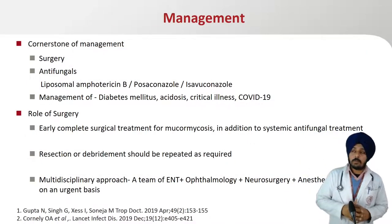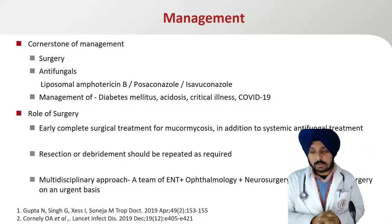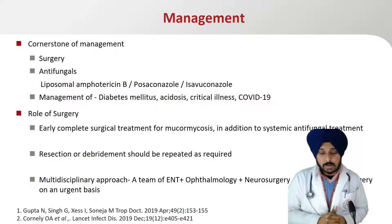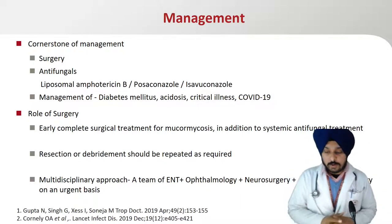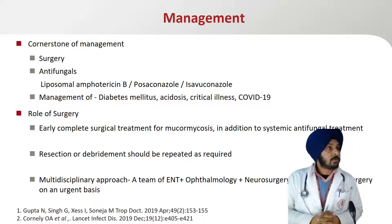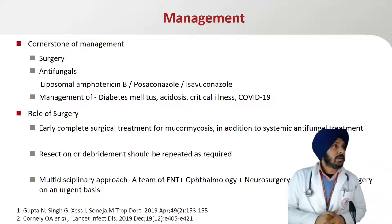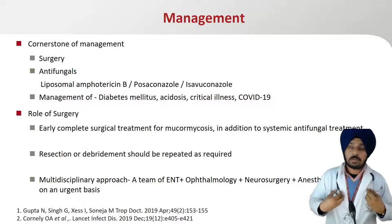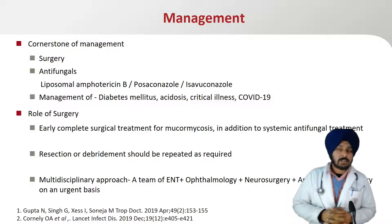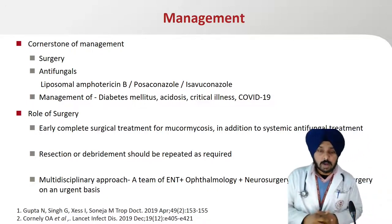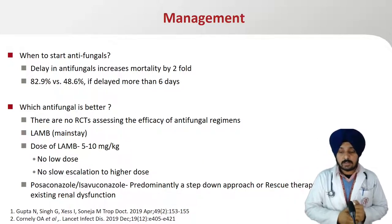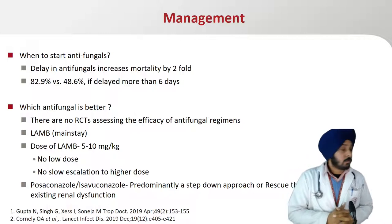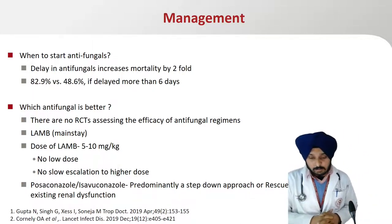After diagnosis with direct microscopy, histopathology, and culture, the main challenge with mucormycosis is management. The cornerstone of management is surgery along with antifungal treatment and management of underlying comorbidities and risk factors. Surgery is very important as tissue necrosis in mucormycosis leads to poor penetration of antifungals. Early complete surgical treatment in addition to systemic antifungal treatment is essential, and resection or debridement should be repeated as required, necessitating a multidisciplinary approach with ENT, Ophthalmology, Neurosurgery, and Anesthesia. A study has shown that if antifungal treatment for mucormycosis is delayed by six days, the risk of mortality increases two-fold.